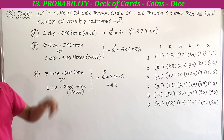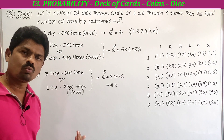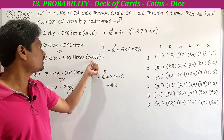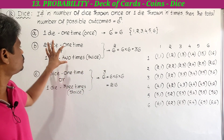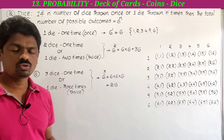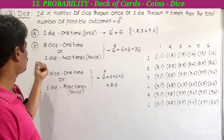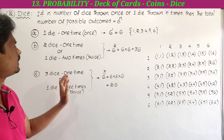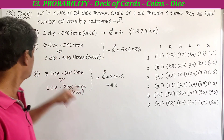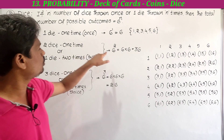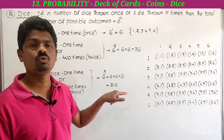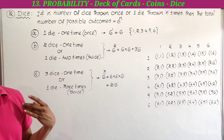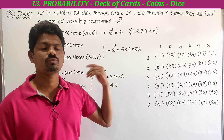If 2 dice are thrown one time, or 1 die is thrown 2 times (twice), both are treated as the same experiment. Since n equals 2, the total number of possible outcomes is 6 to the power 2, which is 6 into 6 equals 36. So there are 36 total possible outcomes when two dice are thrown.